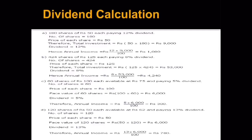So we simply calculate: 5 percent into 100, that is the face value, into 60 shares, giving rupees 300. In the fourth case: 120 shares of rupees 50 each available at rupees 62 paying 13 percent dividend. Two prices are given — 50 is the face value and 62 is the market value, showing it is available at a premium of 12 rupees. But we only take 13 percent into 50 into 120, which gives rupees 780 as the dividend.